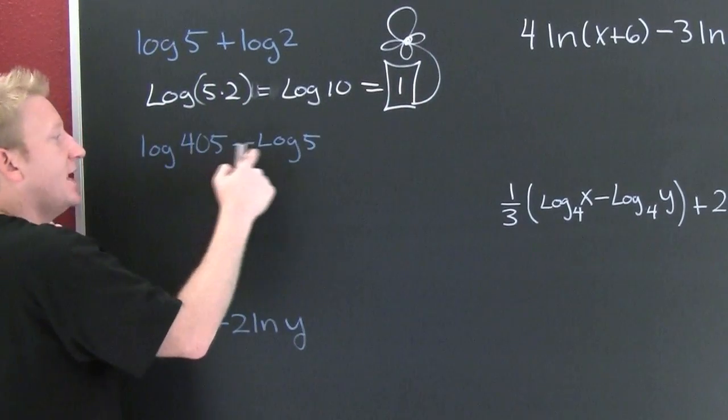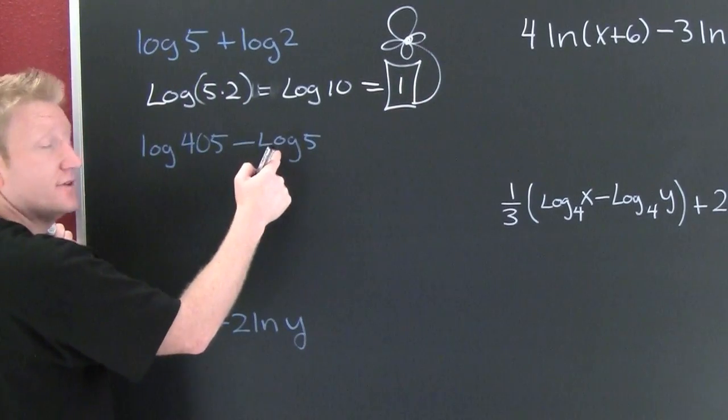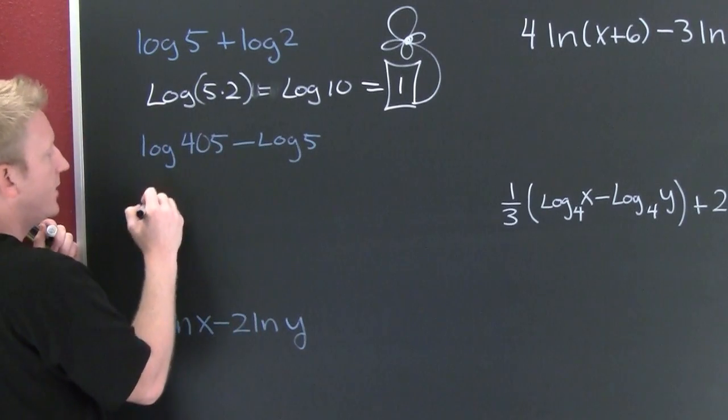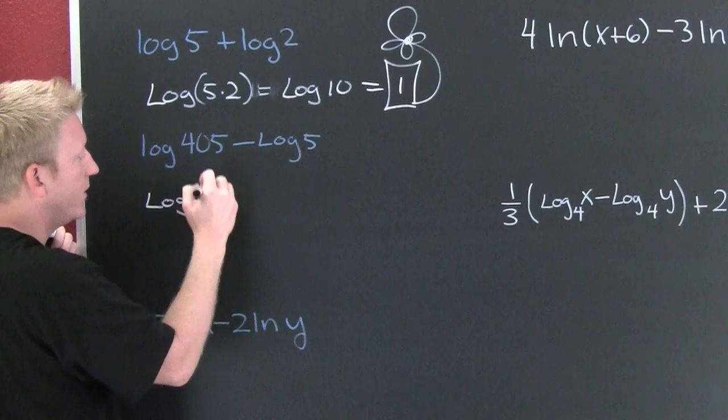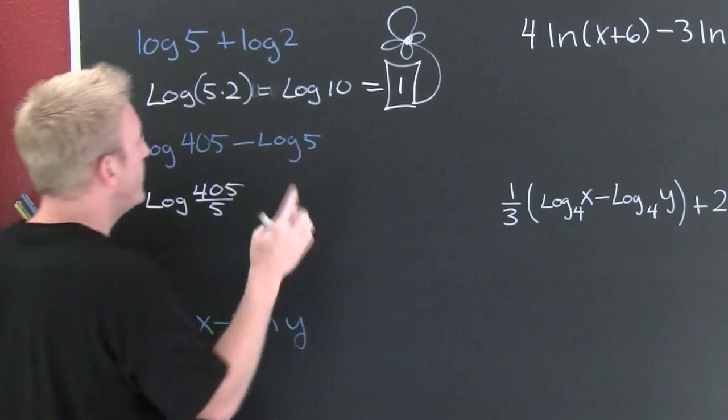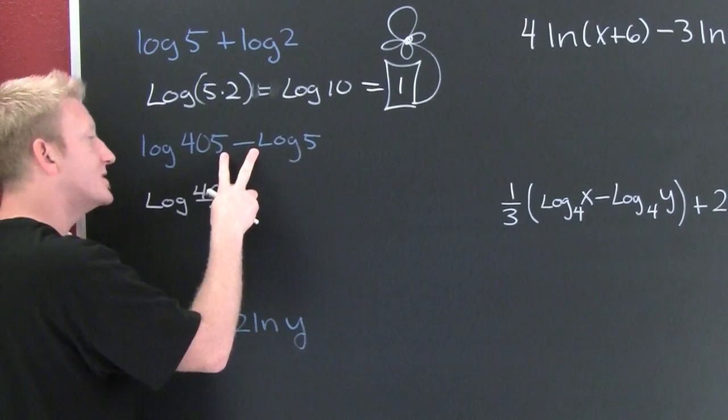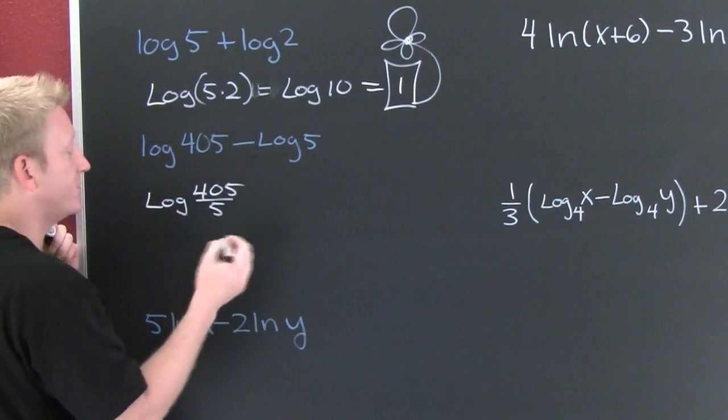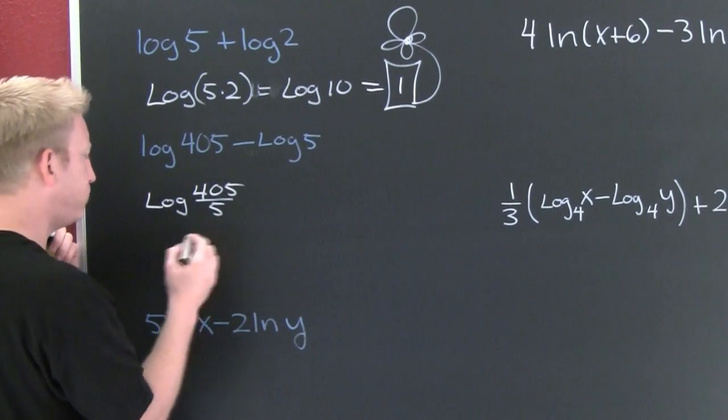Until you get to this one. I see I have the log of a difference, or the difference of logs. The difference of logs is the log of the product. Log 405 divided by five. You might be asking which one gets to become the denominator. This argument goes in the denominator because it has the negative logarithm.